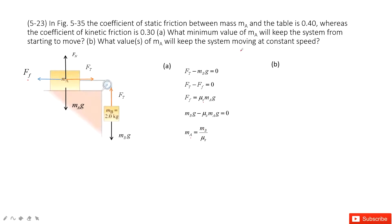The second part is the system moving at constant speed. What does that mean? It means acceleration is zero — the forces are balanced. But one important thing: the system has begun to move and is moving, so the friction becomes kinetic friction.